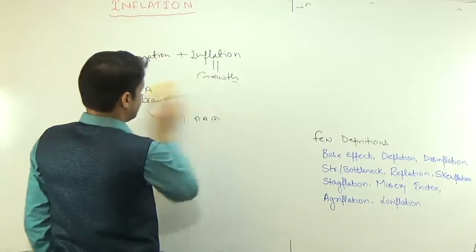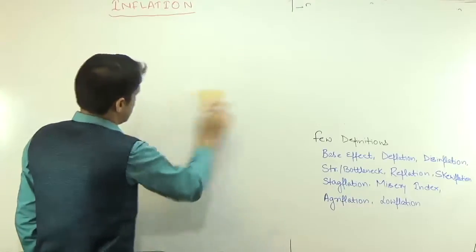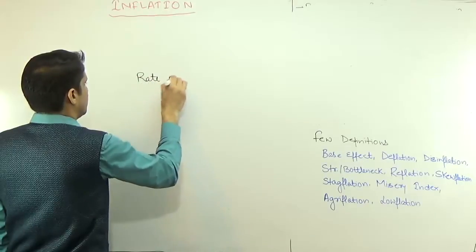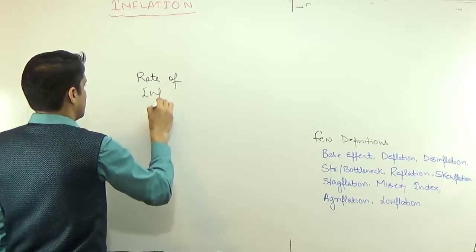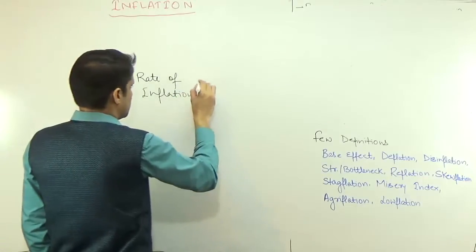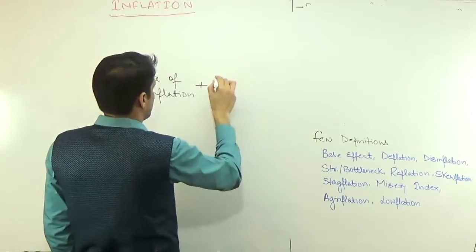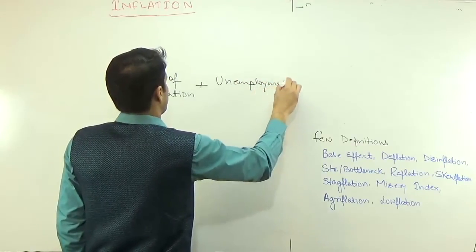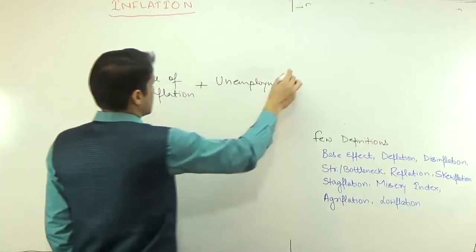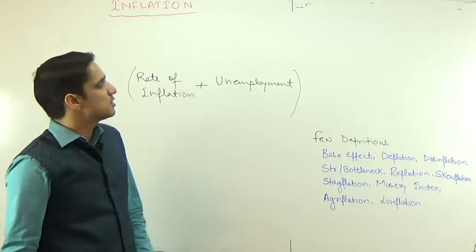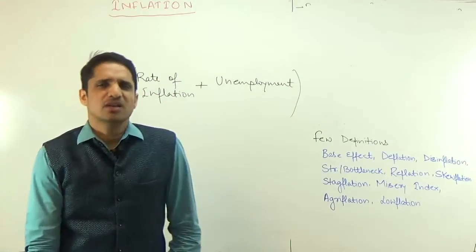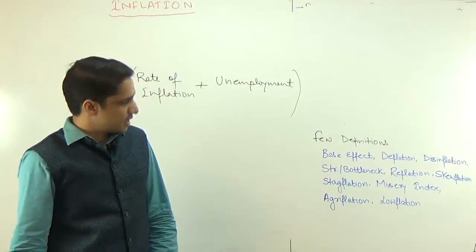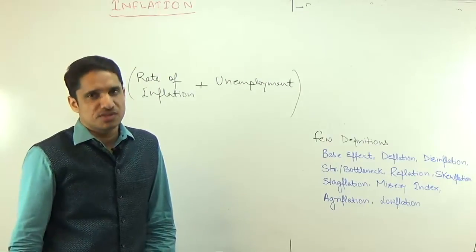Then we have the misery index. Just like the Phillips curve shows the relationship between rate of inflation and unemployment, the misery index is nothing but the mathematical addition of the rate of inflation plus the rate of unemployment. It is not much used in developing countries, but it is used in developed countries, where it acts as a report card of the present government.